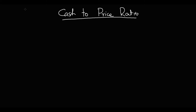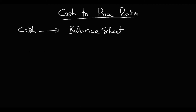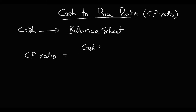Now coming towards the cash-to-price ratio. It is just like the sales-to-price ratio but the difference is that you use cash per share instead of sales per share. The cash figure is available in the balance sheet under current assets. Formula: cash divided by number of shares outstanding, then divided by MPS — same calculation method.